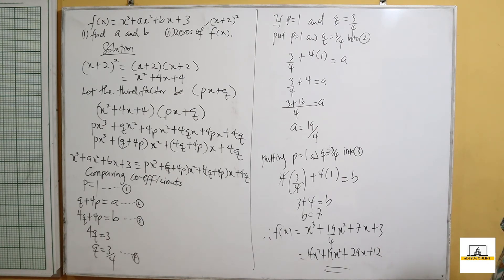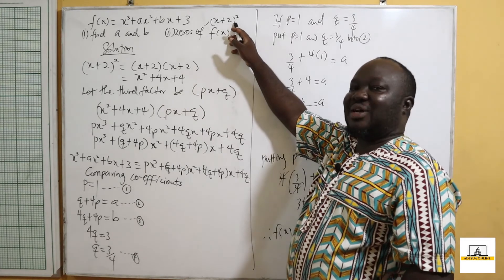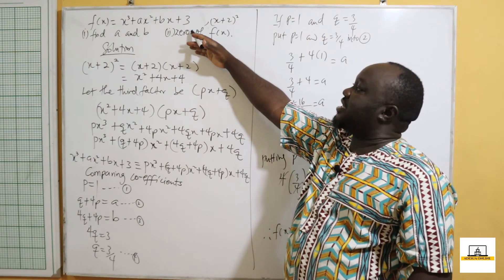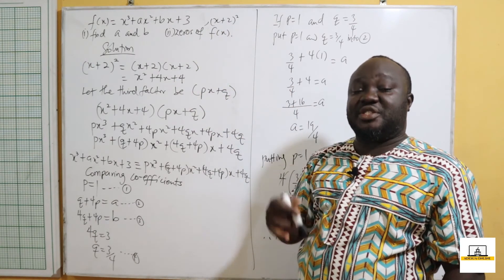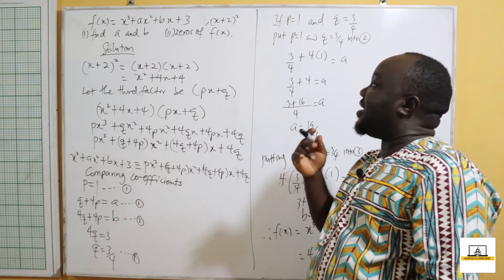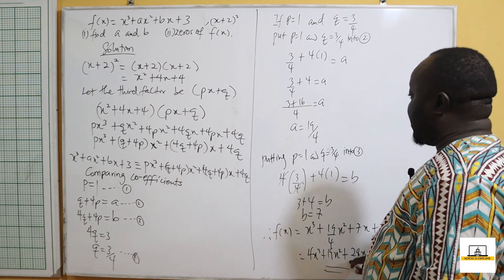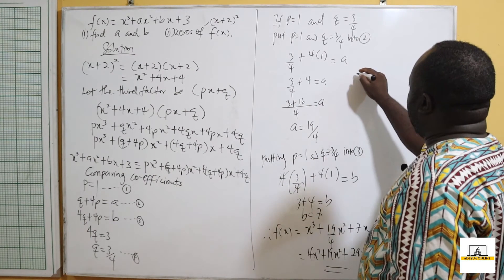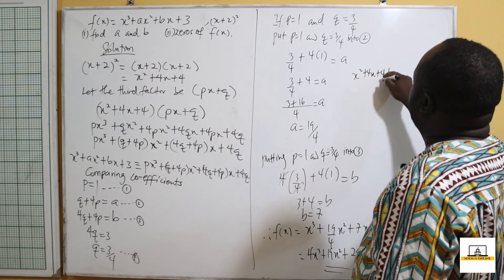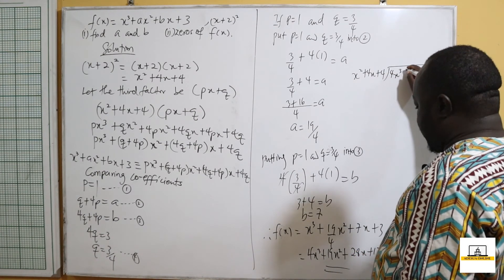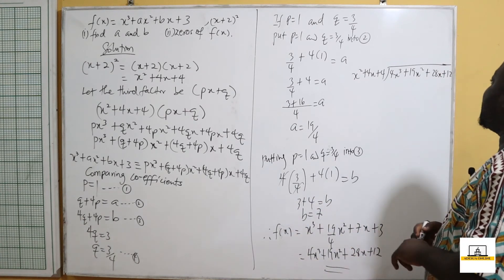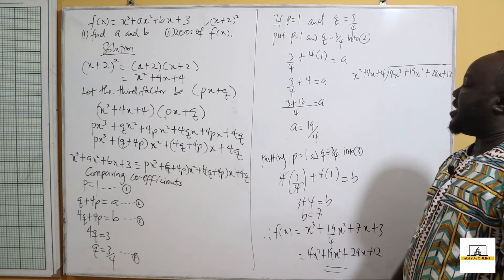Now we are asked to find the zeros of f of x. Because x plus 2 all squared was given to us as a factor, we should divide f of x — which is 4x cubed plus 19x squared plus 28x plus 12 — by x squared plus 4x plus 4, which is the expansion of x plus 2 all squared, to get the third factor.